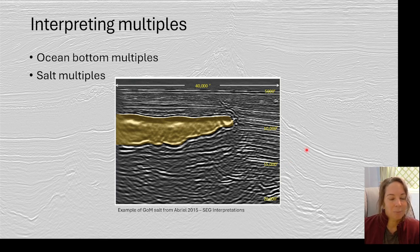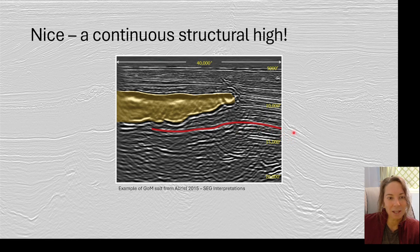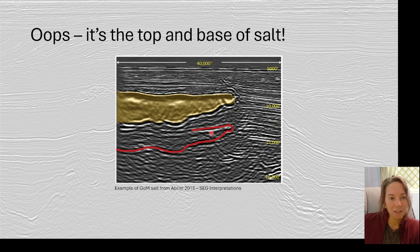Here's an example from one of Bill Abriel's SEG interpretations compilations, which I thought was kind of fun. Here we've got salt, we're working in the Gulf of Mexico, and we can see the top of salt and then the base of salt. So kind of picking in that area, here he's gone along and he's picked this red horizon. We've got this nice structural dome right here. But actually what he ended up picking was part of the reflection of the top of salt. We could also see the reflection of the base of salt. I throw this in here because not all multiples are due to the ocean bottom, but they can be due to any strong reflector. In this case, it's top and base of salt.